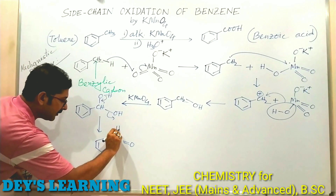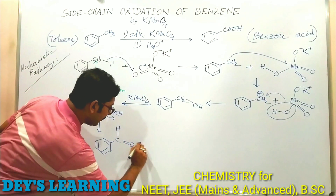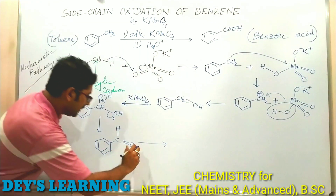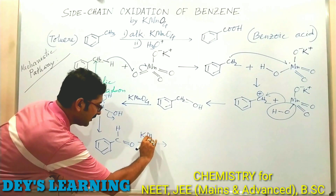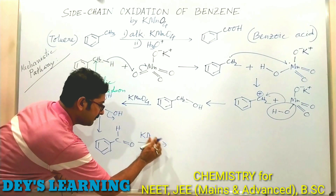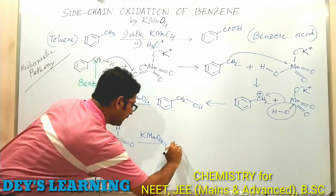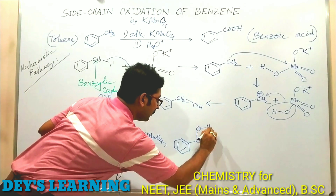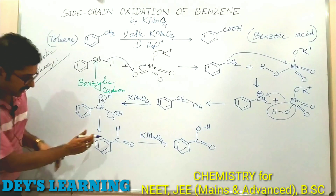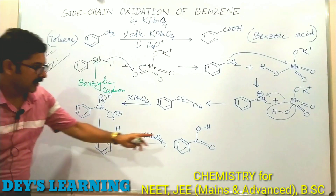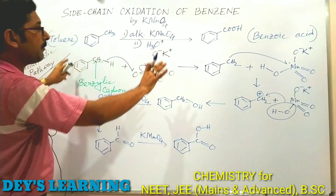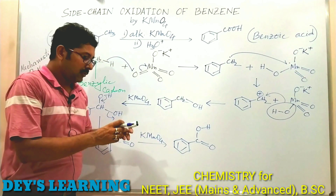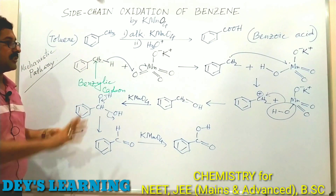In the similar manner, the C–H bond of benzaldehyde is broken again and oxidized by KMnO₄ to give benzoic acid (Ph–COOH). So in each step a carbon–hydrogen bond is broken and a carbon–oxygen bond is formed. This completes the mechanism of oxidation of toluene to benzoic acid. Now let us consider the synthetic applications of this oxidation process.